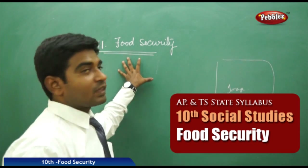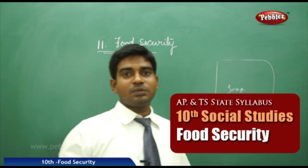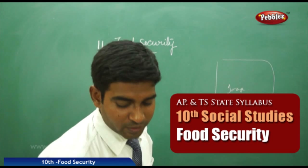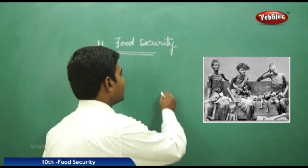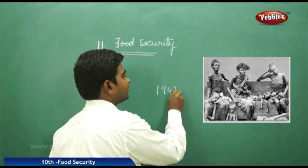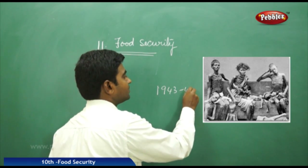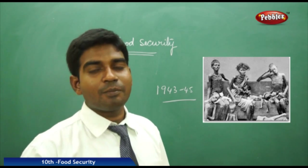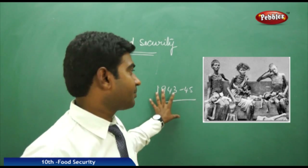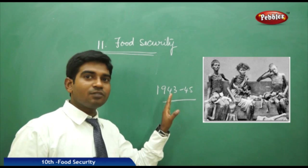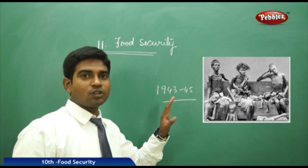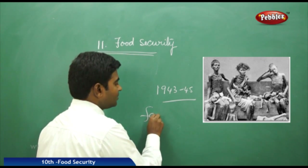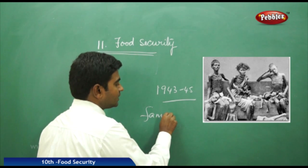Today our concept is food security. Before going into the details of food security, earlier before we got independence — from around 1943 to 1945 — we used to have a lot of food problems: famines and droughts existing in our country. Why did we have famines and droughts during this period? What is the meaning of the word 'famine'? What is the meaning of the word 'drought'?